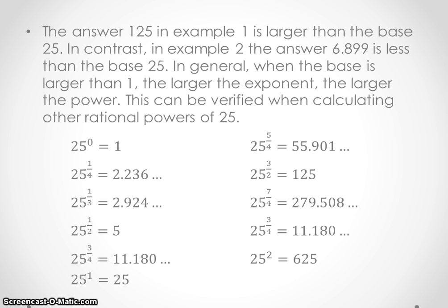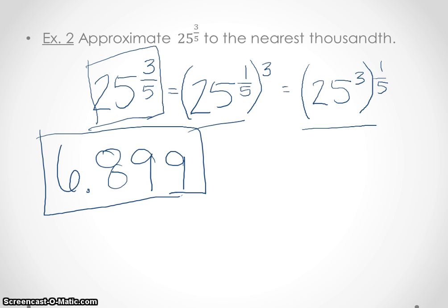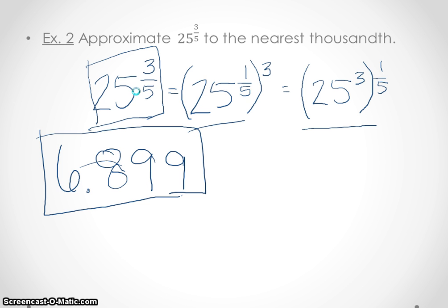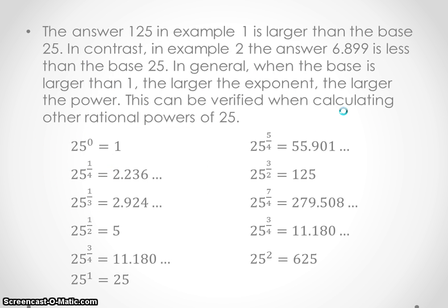If you noticed in the previous two examples: in example two we had 25 to the 3/5 and ended up with 6.899, which is smaller than 25. In example one we had 25 to the 3/2 and ended up with 125, which is larger. In general, when the base is larger than one, the larger the exponent, the larger the result. The exponent 3/2 equals 1.5, which is greater than one — that's why we got a large number.